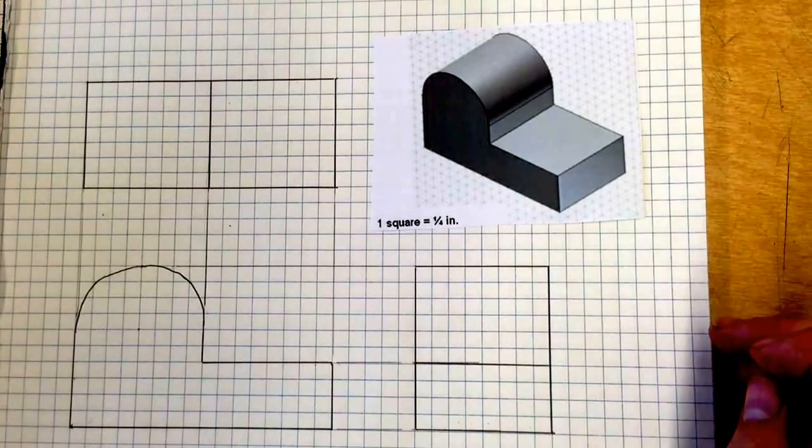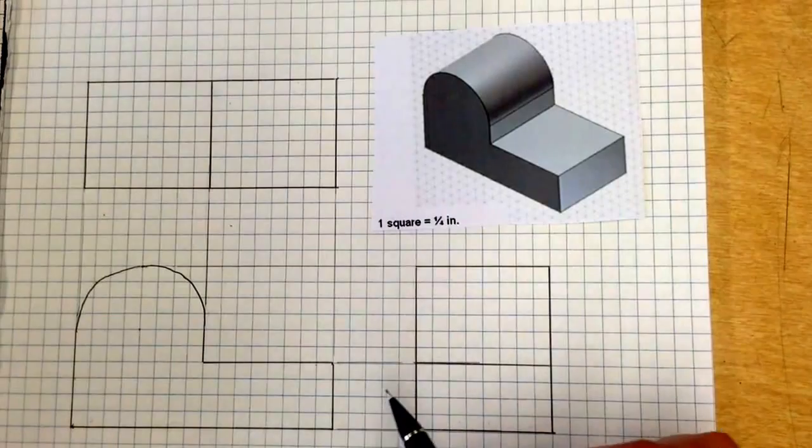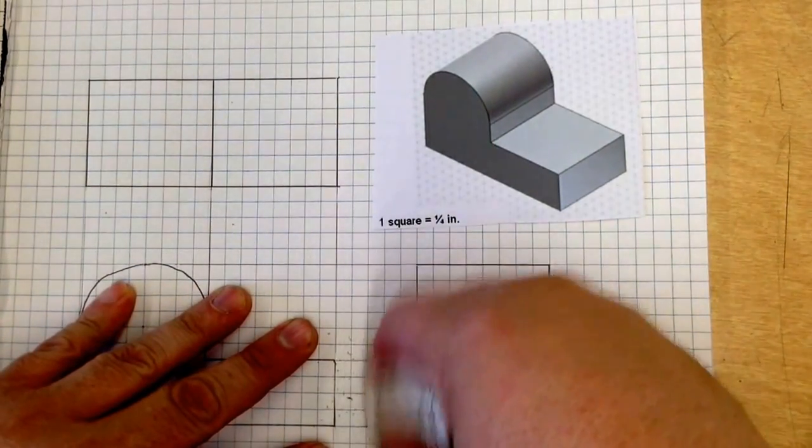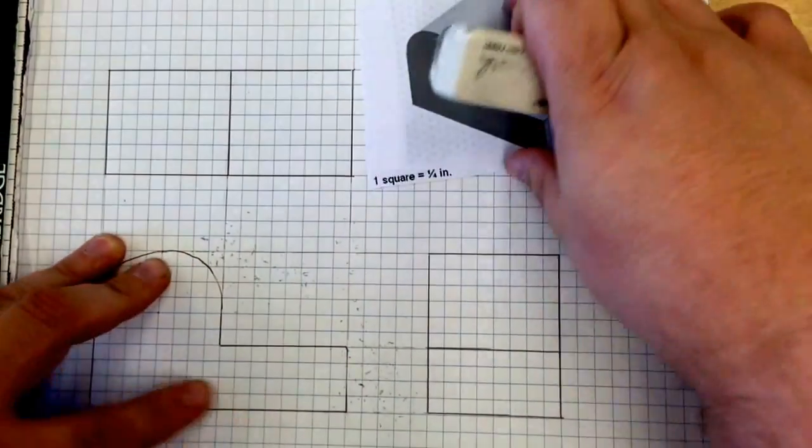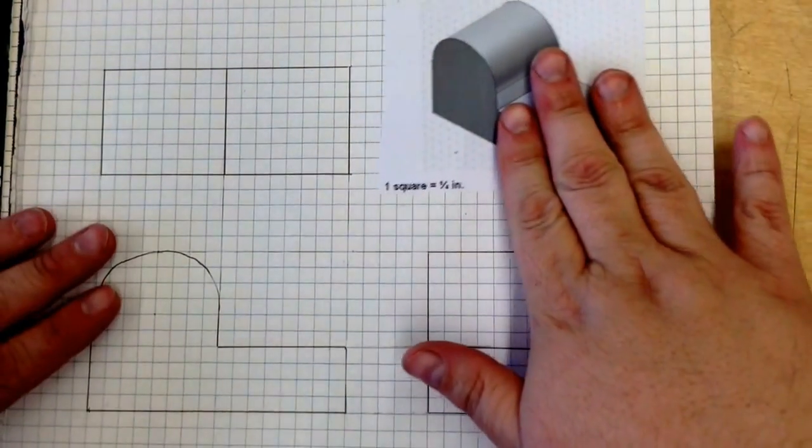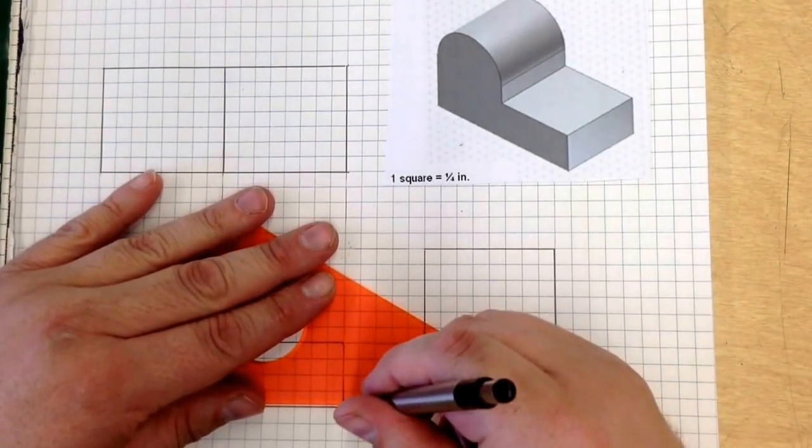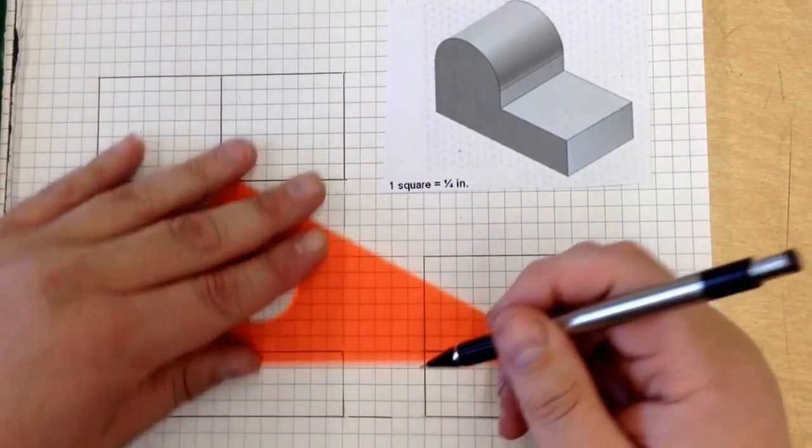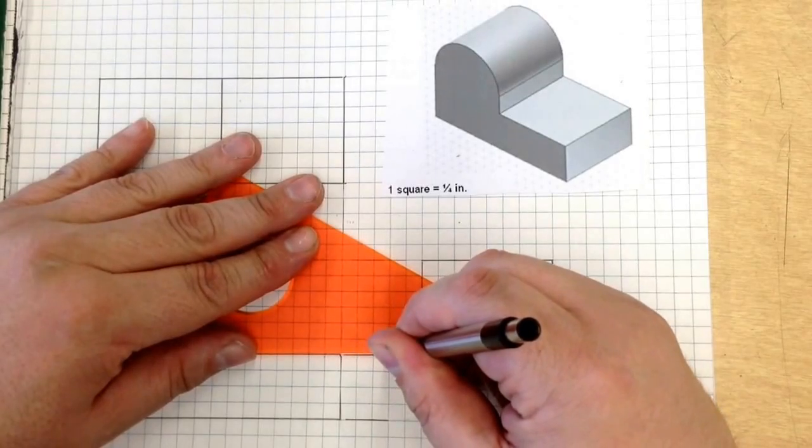So I always like to start with a point of origin right here. So right here, let me erase some of my original construction lines just so I have sort of a clean slate to begin with. I need to start from the bottom. Bring this out like so.